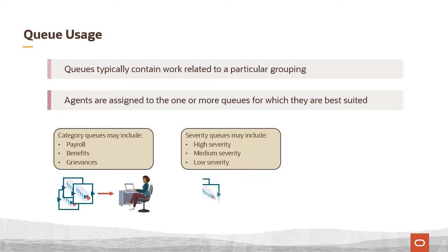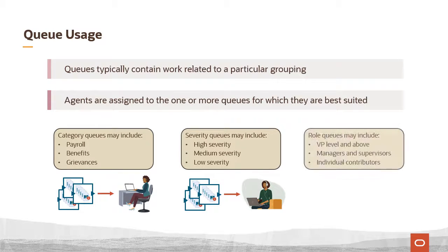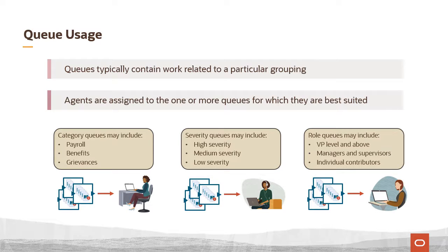Severity queues may be divided into high, medium, and low severity. And role queues may segment requests by roles such as vice presidents, managers, and individual contributors.